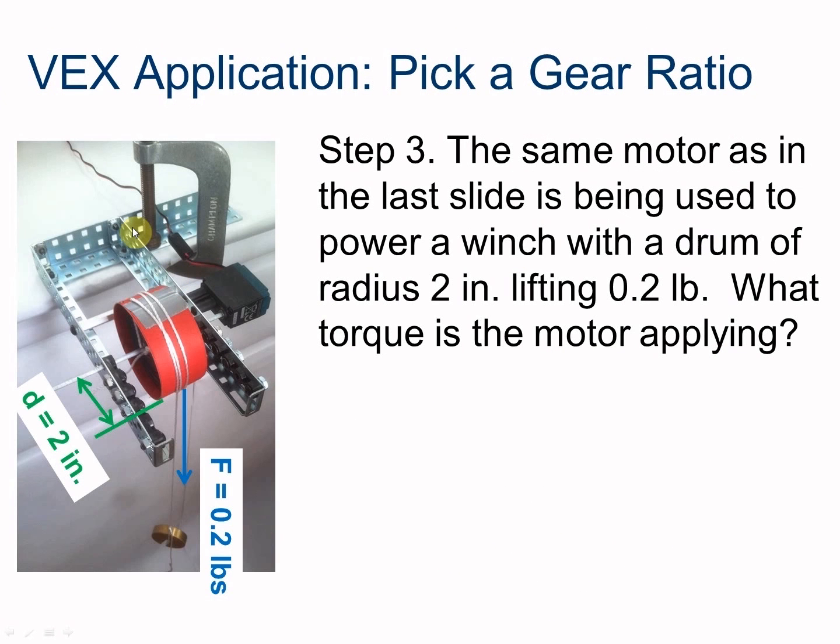Let's have another little setup here. We have some VEX material clamped to a tabletop. We have a motor turning a gear wrapped in construction paper. It makes like a drum, and we're lifting a weight. This weight only weighs 0.2 pounds. The radius of our wheel is 2 inches. So if you want to get maximum power from that VEX motor using this winch, we need it to exert 2.1 pound inches. But as designed here with a direct drive, the motor is only exerting a torque of 0.4 pound inches.